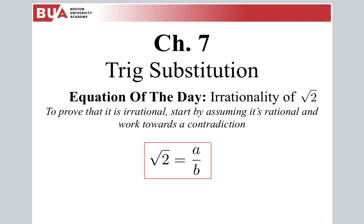Continuing with trig substitution. The equation of the day is really more about how we do proofs in math. One of the most powerful things we can do is proof by contradiction. A classic example is how do we prove that root 2 is irrational — that root 2 cannot be written as a fraction, same thing with pi. The answer is: you start by assuming it's rational and work towards a contradiction, something like 0 equals 1.